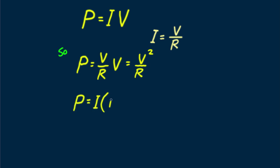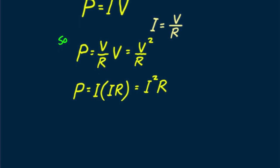From P equals IV, substitute Ohm's law for I, and we have P equals V squared over R. Or substitute for V, which Ohm's law says equals IR, then P equals I squared R. So we have three equations for electric power.